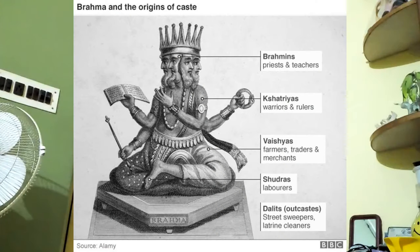The caste system is probably the first thing that comes to mind when you hear the word Hinduism. The caste system in Hinduism originally divided society into four main categories: the Brahmanas, or the priests and scholars; the Kshatriyas, the kings and warriors; the Vaishyas, the traders and merchants; and lastly the Shudras, the people meant to do manual jobs.